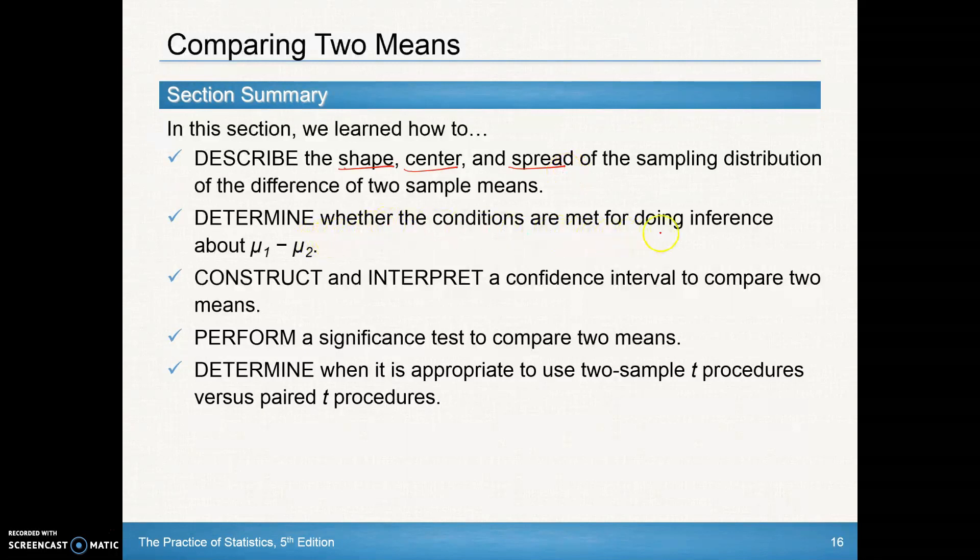You should be able to determine where the conditions are met for doing inference. That's our simple random sample, independence, the 10 percent condition, and the normality piece. Make sure we've got sample sizes above 30 or that we're sampling from a normal distribution. With sample size below 30, if you don't know if it's coming from a normal population, graph it and make sure you do not have skewness or outliers.